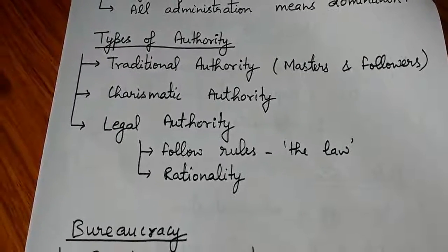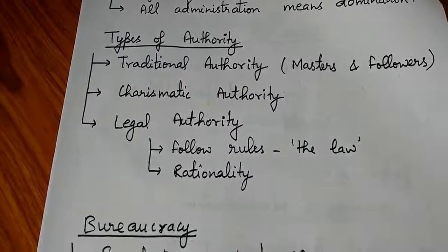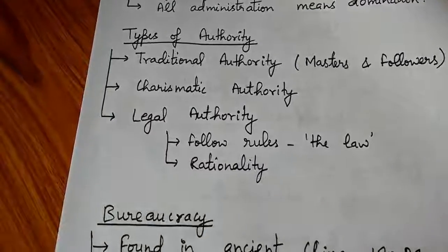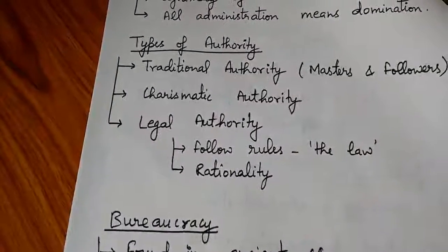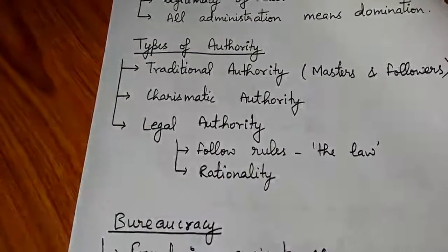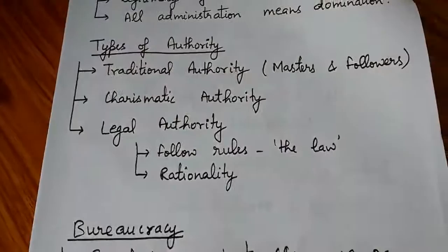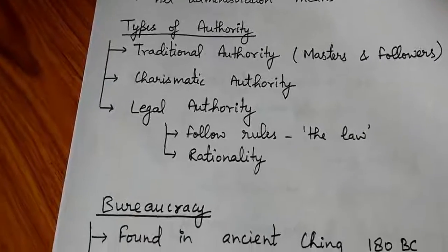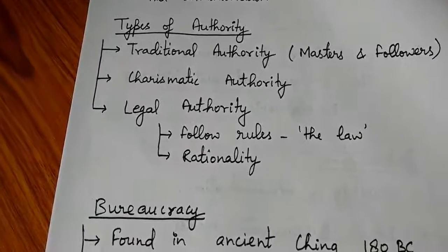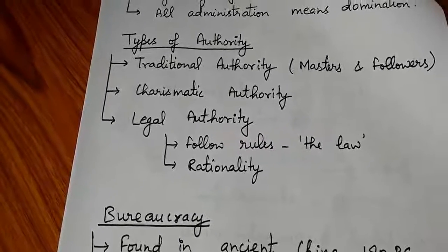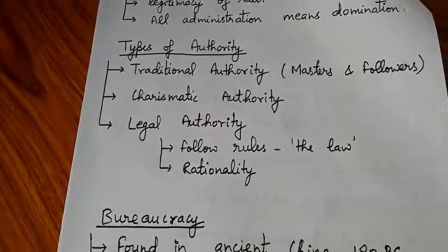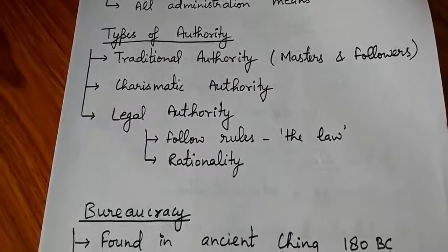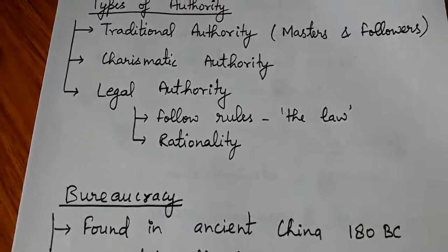The second type is charismatic authority, found in leaders who are by their very nature so attractive or whose leadership is so compelling that people are drawn to them and follow their orders willingly. For example, Baba Ramdev has many followers due to his own personality as a yoga guru. Other examples include Anna Hazare and Arvind Kejriwal.